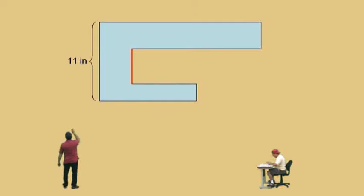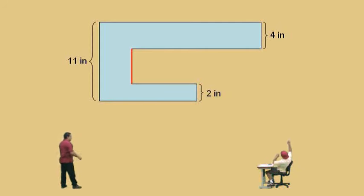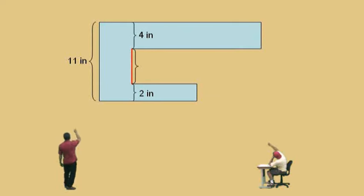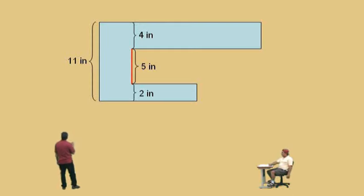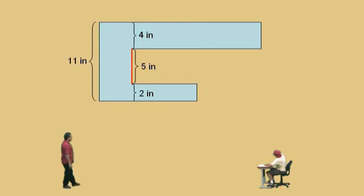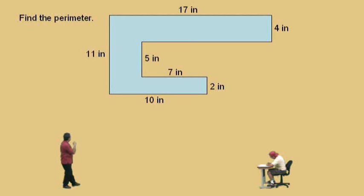Now let's work on this vertical length. Vertically, we have 11, we have 4 over there, and a 2 there. All the way up and down is 11. We've got a 4 up there and a 2 down here, so it's like a subtraction problem. 4 and 2 adds up to 6 — how much do we add to 6 to get 11, Charlie? 5. Our missing length there should be 5 inches, because 4 plus 5 is 9 plus 2 is 11. So now we have all our missing lengths: 5 inches and 14 inches.